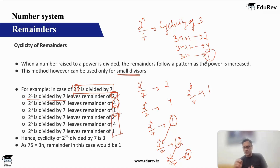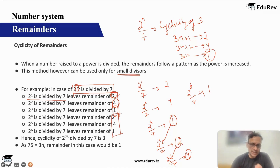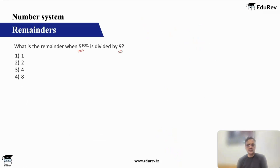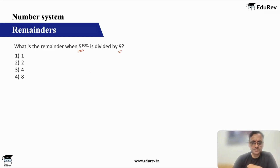Very simple method but will not work for large numbers. So let us understand again through a question. We have five raised to some power divided by nine. So both these are single digits — I can apply cyclicity.